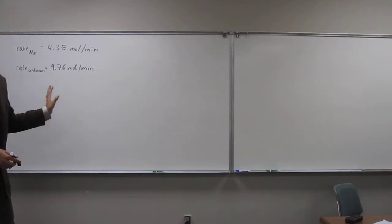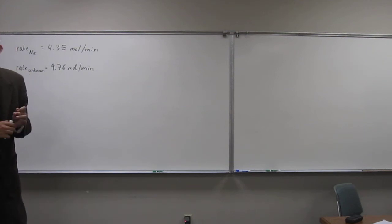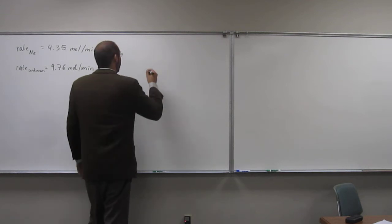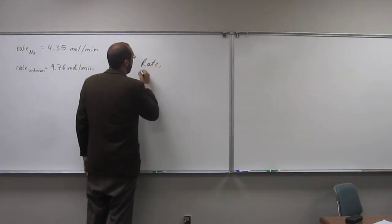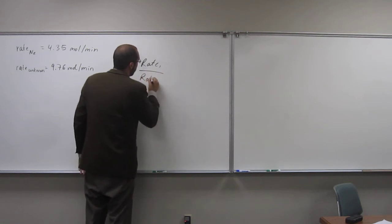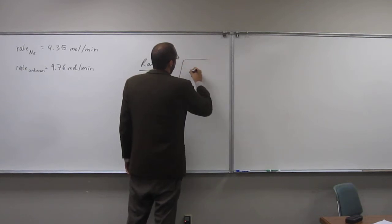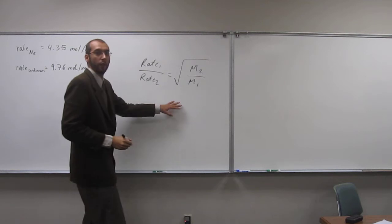So again, what law are you going to use here? What equation? Graham's Law. Yeah, very good. And do you guys remember how to do that again? So it's what? Rate 1 over rate 2 equals square root of the molar mass of 2 over the molar mass of 1. Okay?